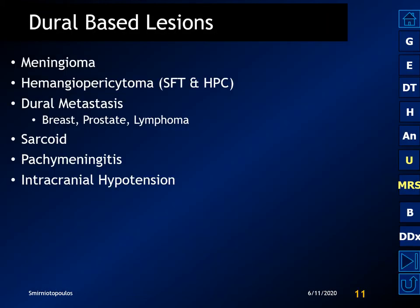There are several other dural-based lesions that must be considered: meningioma, hemangiopericytoma or solitary fibrous tumor, dural metastasis, granulomatous disease like sarcoid and pachymeningitis, and intracranial hypotension, which can also cause dural thickening and may in some cases resemble a mass lesion.